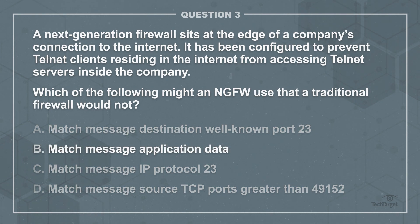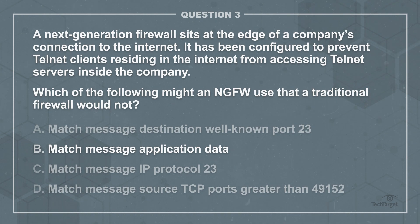While several differences between traditional firewalls and Cisco's Next Generation Firewalls exist, Application Visibility and Control, or AVC, is among the most important. This is a way for the firewall to look into a packet's application layer to identify its purpose.